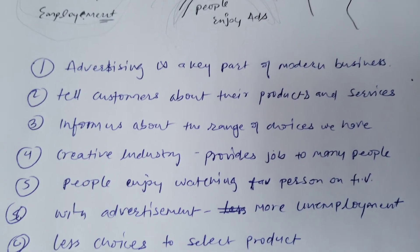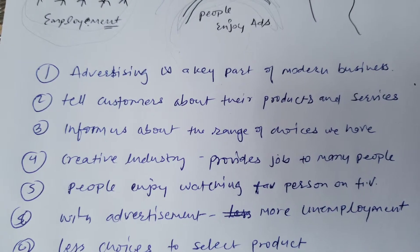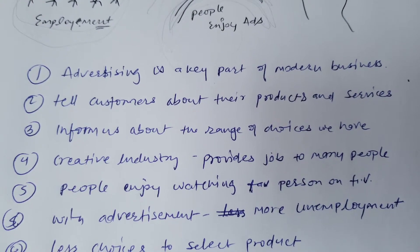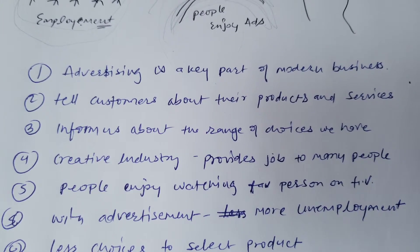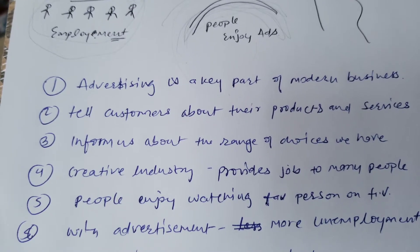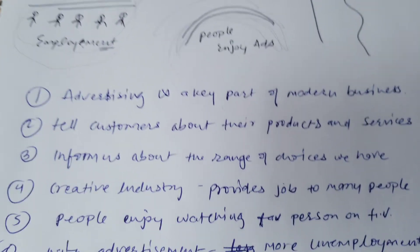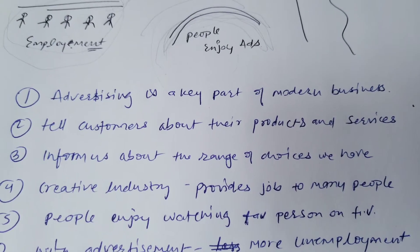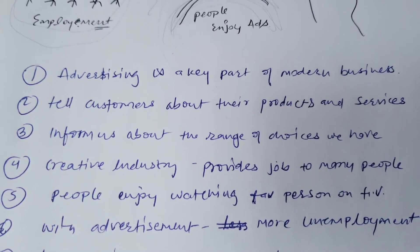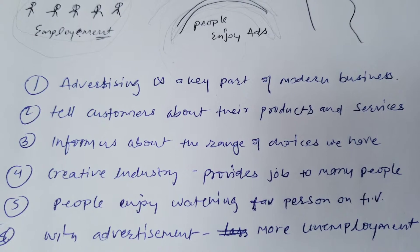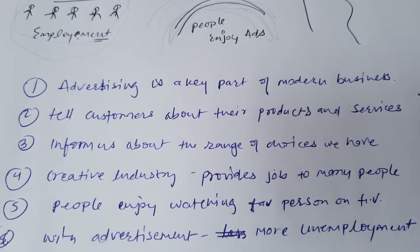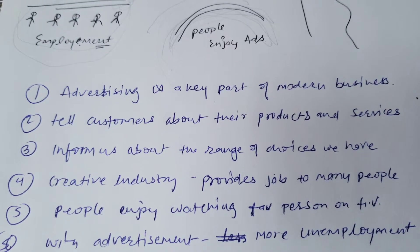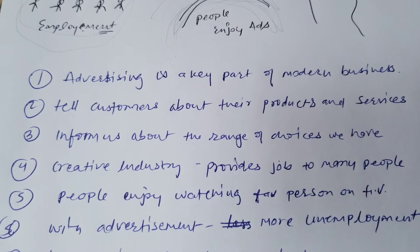Bullet point one: advertisement is a key part of modern business. You need to advertise your products and services to survive in the industry. Bullet point two: it tells customers about products and services — through advertisement, companies are able to communicate and showcase their products and services to the end user. Bullet point three: it informs about the range of choices available. As discussed, there are different companies manufacturing the same product — say cell phones or detergent powders — and through advertisements people come to know they have various options to choose from.